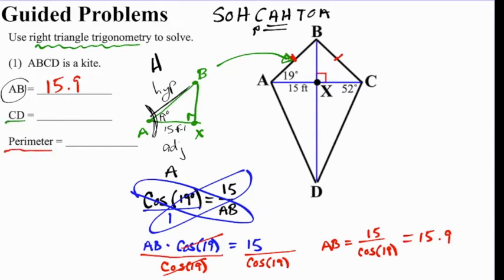And that's going to help us when we have to find the perimeter. Now they want us to find CD. Notice that CD is over here, and we want to take the triangle out that uses CD. So we have X, C, and D. We see that that is a 52-degree angle. And since AX is 15, XC is also 15, because that is the diagonal of the kite that is bisected by the other diagonal. And we mark the angle that we're given, the 52 degrees. And we see that this is adjacent, and we're solving for CD, which is hypotenuse. So once again, we're using cosine.